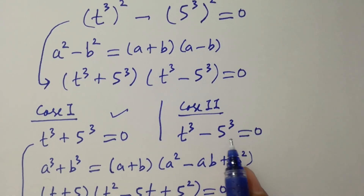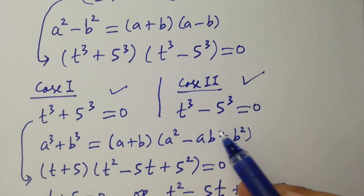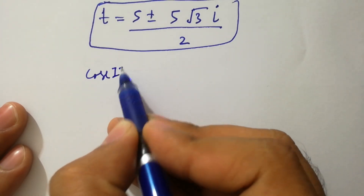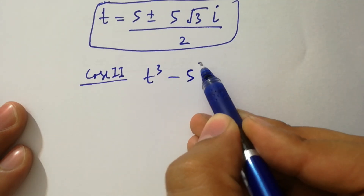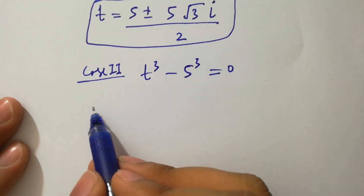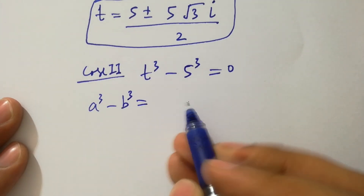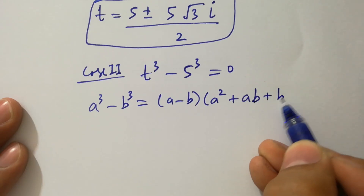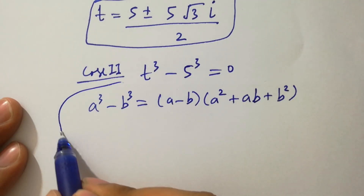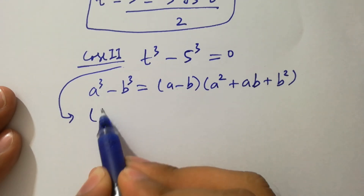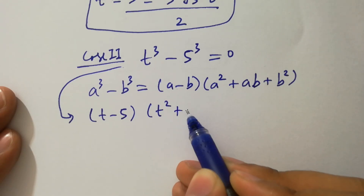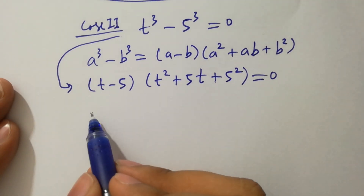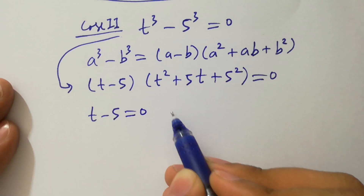Next, taking Case 2: t³ − 5³ = 0. By the formula a³ − b³ = (a − b)(a² + ab + b²), we get (t − 5)(t² + 5t + 25) = 0.